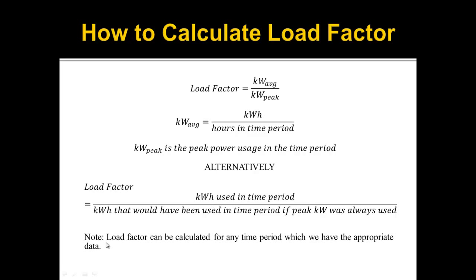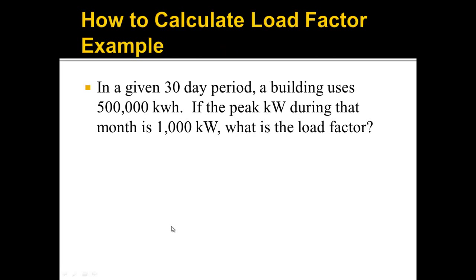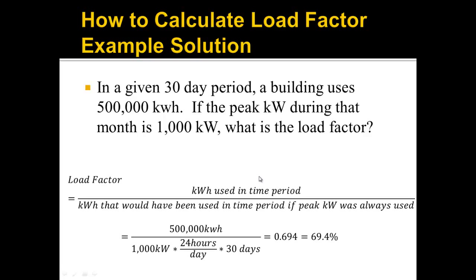Alternatively, you can think about load factor as the kilowatt hours used in the time period divided by the kilowatt hours that would have been used if peak kilowatts was always used. These two formulas give the exact same answer — just two different ways to think about it. Load factor can be calculated for any time period for which we have appropriate data: daily, weekly, or monthly. Example: in a 30-day period, a building uses 500,000 kilowatt hours. The peak kilowatt during that month is 1,000 kilowatts. Using the formula: 500,000 kWh divided by (1,000 kW × 24 hours × 30 days) = 0.694, or 69.4% load factor.